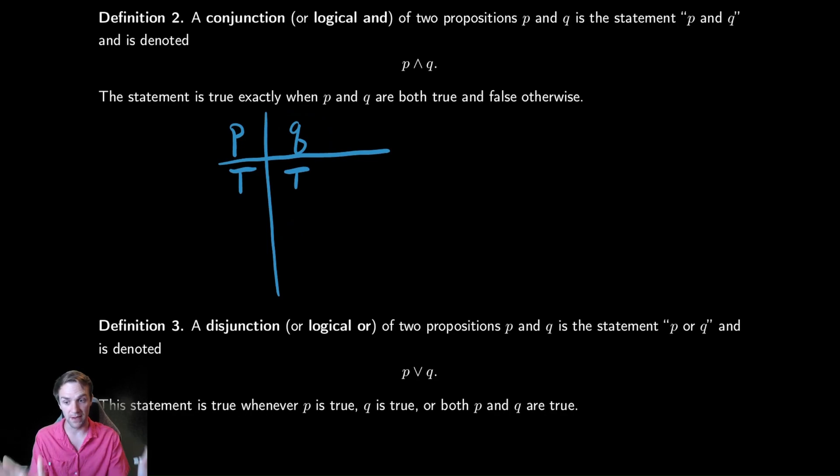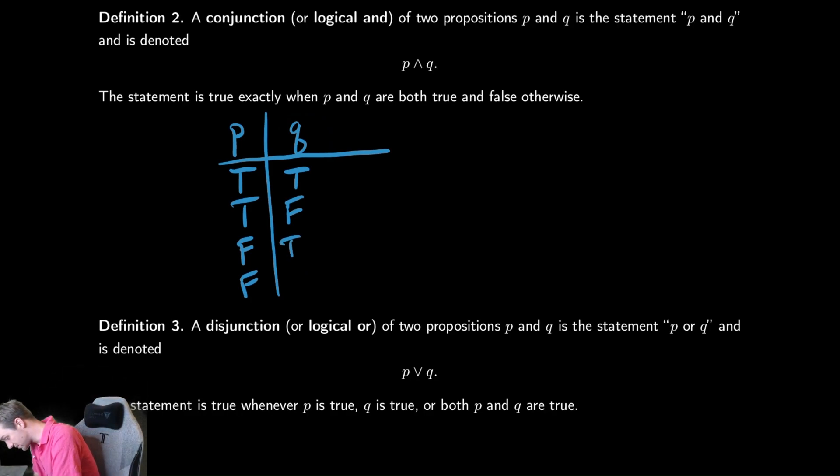So one other way to come up with all the possibilities would be that you could say, well, P can be true. I'm going to look at all the possible options for Q when P is true. So when P is true, Q can have two options. It is either true or it is false. And similarly, when P is false, there are two options for Q. It is either true or it is false. And that is a bit more systematic. So I tend to like that approach more, especially when you get to three, four, five variables. These combinations will grow rather quickly. We'll talk about that in a little bit, how many there are given the number of variables. But it is useful to have a systematic approach for coming up with these things.